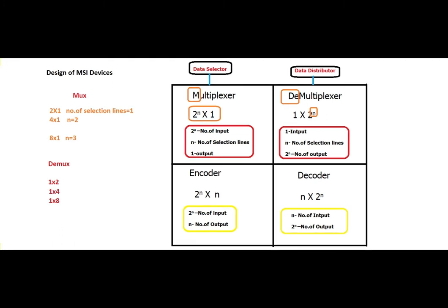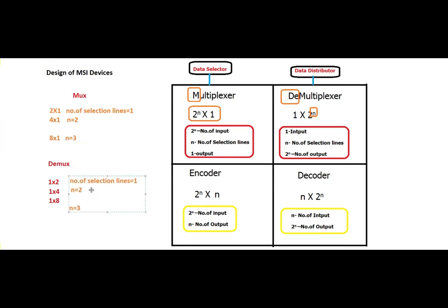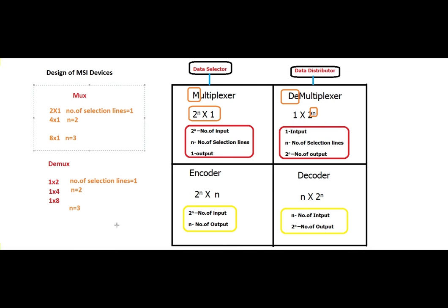In both cases, the number of selection lines will be the same. For a 2-by-1 multiplexer, the number of selection lines is 1; for a 4-by-1 multiplexer, it is 2. Similarly, for a 1-by-2 demultiplexer, selection lines are 1, because 2 power n — here n equals 1. So we can conclude: multiplexer is many-to-one with more inputs but only one output; demultiplexer is just the opposite.